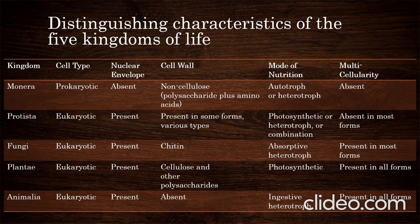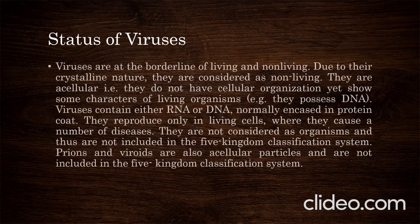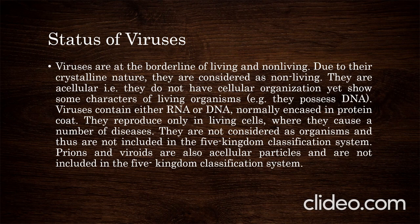Here is the status of viruses. Viruses are at the borderline of living and non-living. Due to their crystalline nature, they are considered non-living. They are acellular — they do not have cellular organization — yet they show some characters of living organisms: for example, they possess DNA. Viruses contain either RNA or DNA, normally encased in a protein coat. They reproduce only in living cells, where they cause a number of diseases. They are not considered organisms and thus are not included in the five-kingdom classification system.